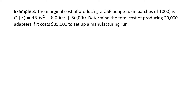Example: the marginal cost of producing x USB adapters in batches of 1,000 is C prime of x equals 450x squared minus 8,000x plus 50,000. Remember, marginal cost is another way to say the derivative of the cost function. Determine the total cost of producing 20,000 adapters if it costs $35,000 to set up a manufacturing run. The phrase manufacturing run suggests a startup cost — in this calculus setting, we call that the initial condition: C of 0 equals 35,000.